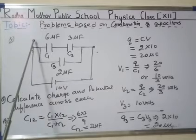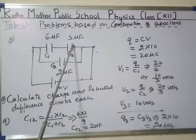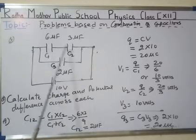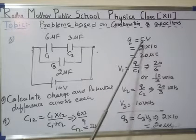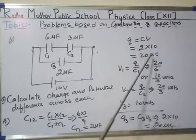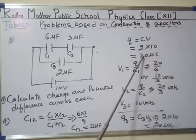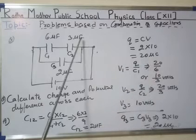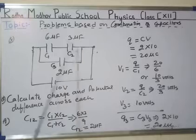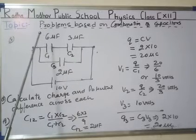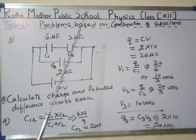Now, total charge on the effective combination, q, equals c*v. Here c is 2 microfarad and v is 10 volts, so it comes out to 20 microcoulomb. Charge remains same in series combination, so charge across 6 microfarad is 20 microcoulomb as well as across 3 microfarad is also 20 microcoulomb.